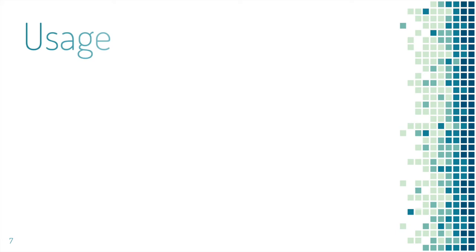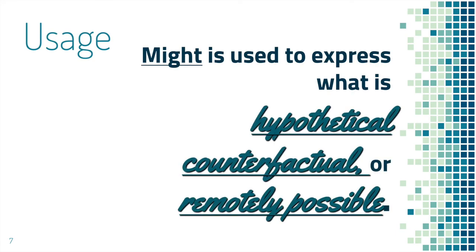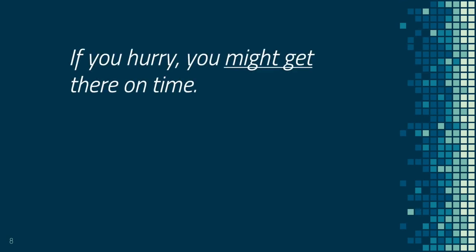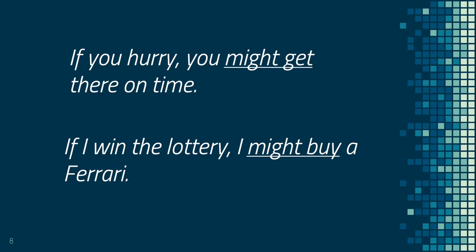Third usage: might is used to express what is hypothetical, counterfactual, or remotely possible. The examples are: if you hurry, you might get there on time. If I win the lottery, I might buy a Ferrari. Notice might plus the base of the verb — the first one is get, the second one is buy. So it's just hypothetical in both cases, and this is the first conditional.